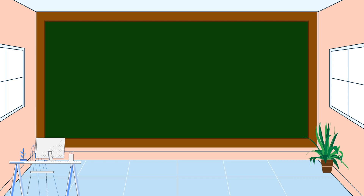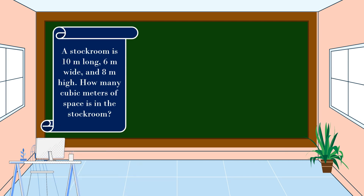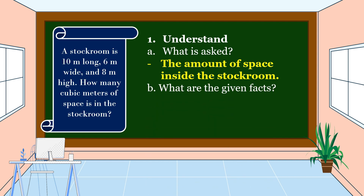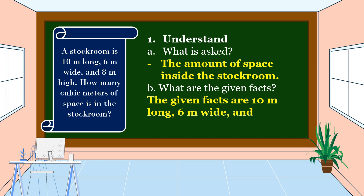How are we going to solve this problem? We are going to use the 4-step plan. First, we are going to understand the problem. We should know what is asked. In this problem, it is asking for the amount of space inside the stock room. Next, we should know what are the given facts. The given facts in this problem are 10 meters long, 6 meters wide, and 8 meters high.